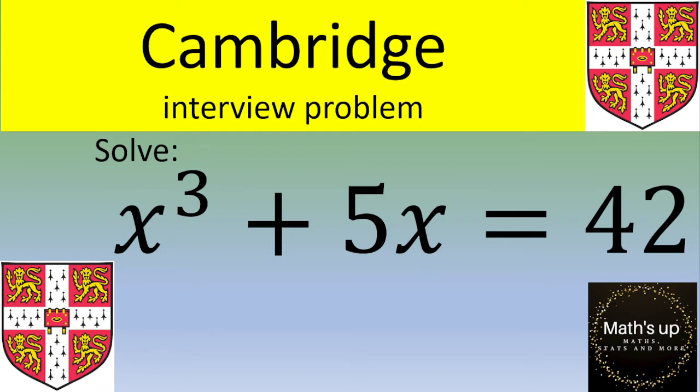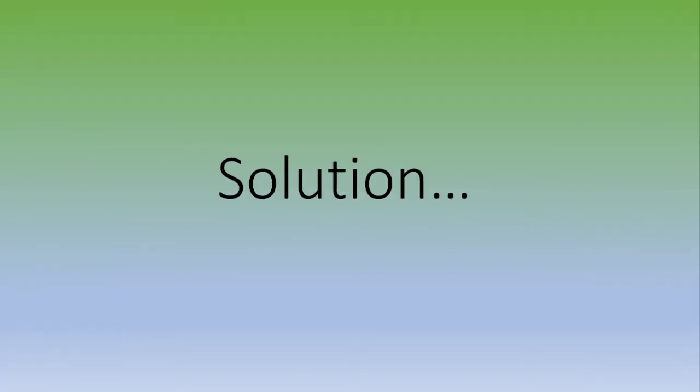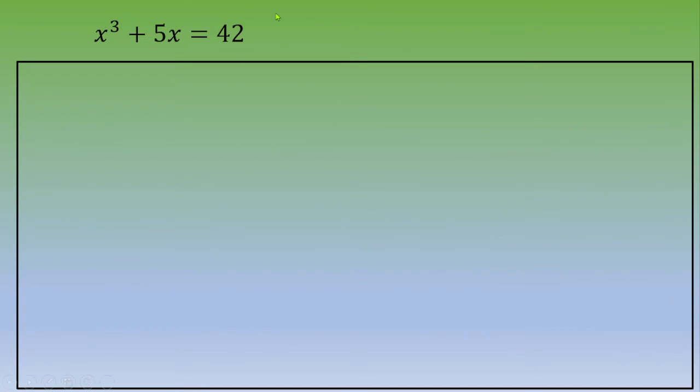Otherwise, let's see the solution. There are many ways to solve such an equation. One way is to notice that on the left you've got x cubed plus 5x. You can factor by x and you will obtain x times x squared plus 5 equals 42. That means that x could divide 42.